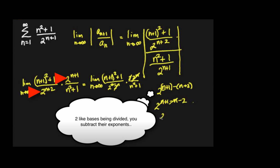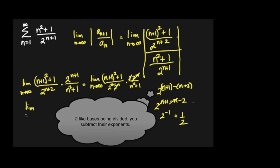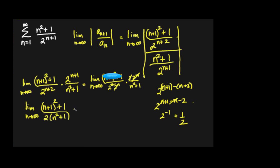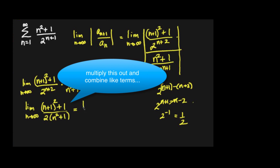The n's cancel, leaving a negative one in the exponent. Now let's simplify by writing out (n+1)²: that gives n² + 2n + 1 on top, and 2n² + 2 on the bottom.